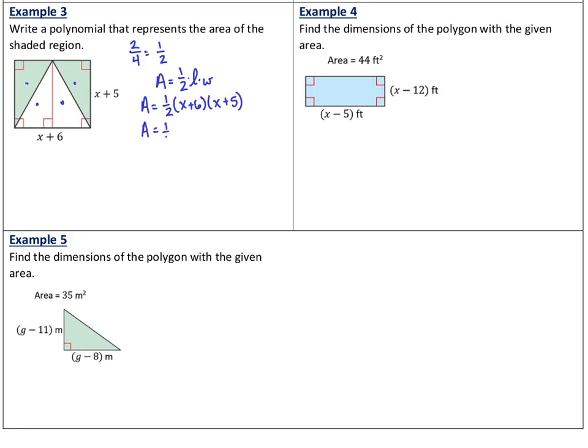I'll use the expression x plus 6 for the length and x plus 5 for the width. Let's do our foiling first. First times first is x times x. Outside, I've got plus 5x. Inside, I've got 6 times x. Last times last is plus 30. Combine like terms: 1/2 times x squared plus 11x plus 30. Now we'll distribute the 1/2 to get 1/2 x squared plus 11/2 x plus 15.